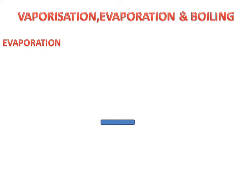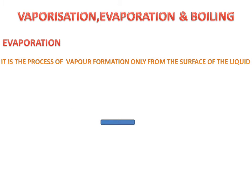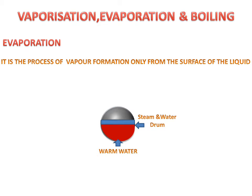What is evaporation? It is the process of vapor formation only from the surface of the liquid. We have a steam and water drum with warm water. This is the liquid surface. If vapors are formed only from the surface of the liquid, then it is called evaporation.